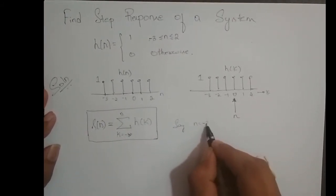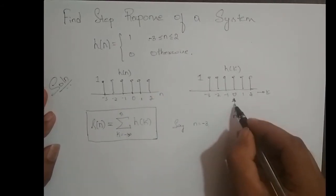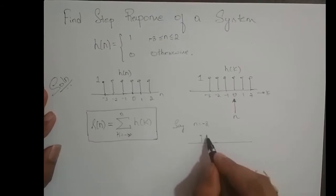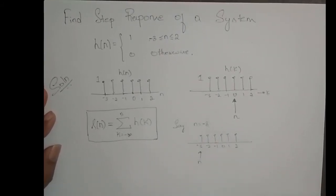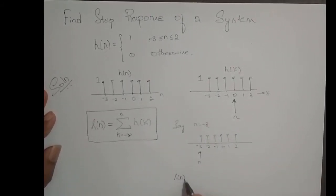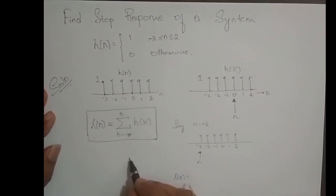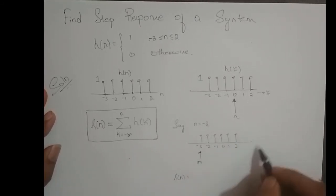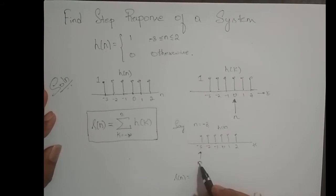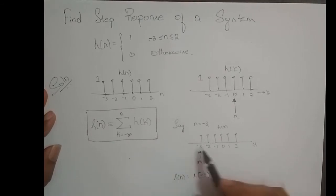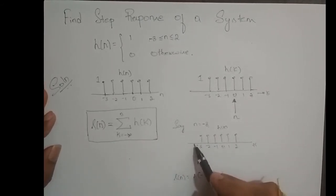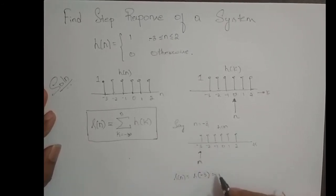Say if I put n equal to minus 3 — so the slider is at minus 3. What is S of minus 3? Starting from minus infinity I need to sum it up. From minus infinity till minus 4 it is completely 0, but I have a sample only at n equal to minus 3, which is 1. So S of minus 3 equals 1.